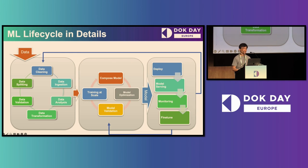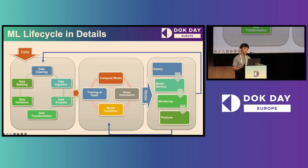Each phase is constituted of multiple tasks and operations, as you can see here. Different tasks are conducted by different teams with specific expertise and skills. For example, data engineers work on data ingestion, data transformation, and data splitting. Data scientists work on data analysis and feature extraction. ML practitioners work on model composing and optimization. ML engineers work on model training at scale and model validation. DevOps and software engineers work on model deployment and application integration. Having a platform to facilitate the entire ML pipeline and enable various teams becomes a must-have to succeed in ML enablement.